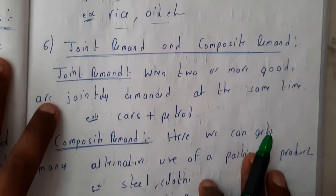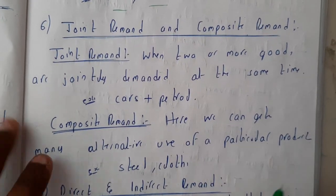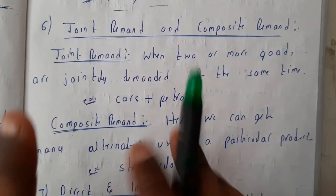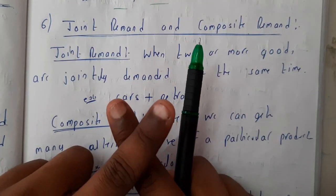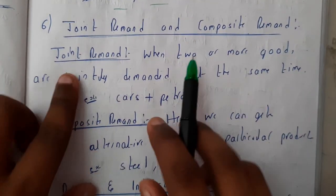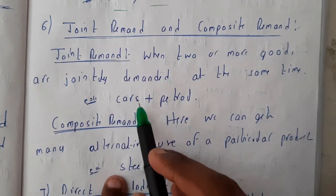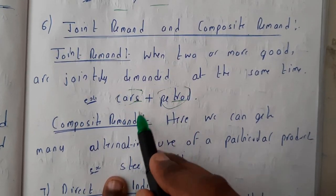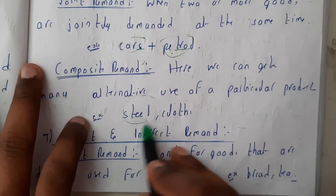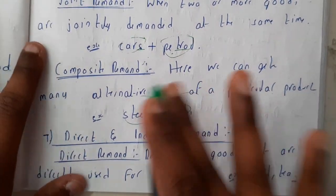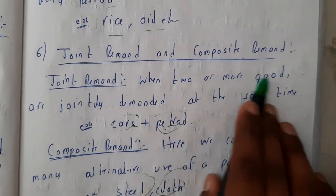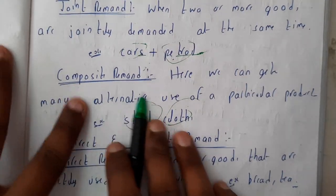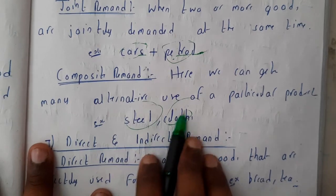We also have joint demand and composite demand. In joint demand, one demand depends on the other — the best example is car and petrol: if you buy a car, you indirectly need to buy petrol. In composite demand, the goods are independent of each other, like steel and clothes, which have no dependency. Composite demand means we can get many alternatives using a particular product.